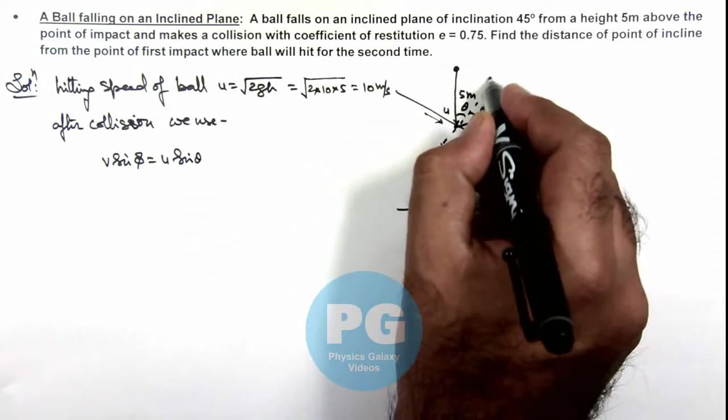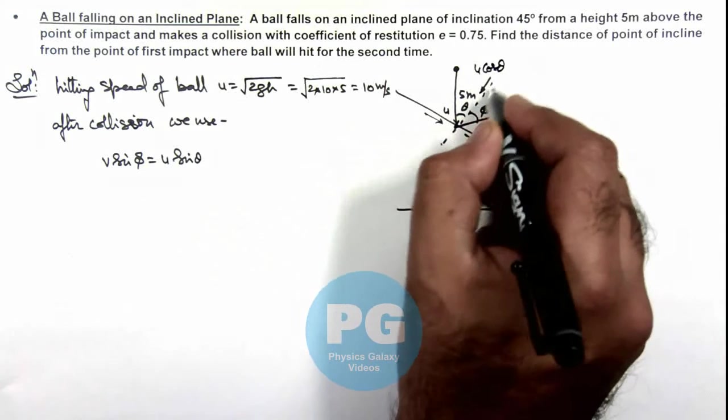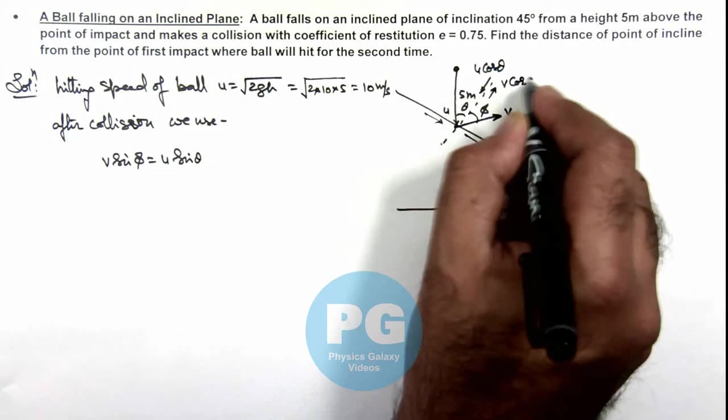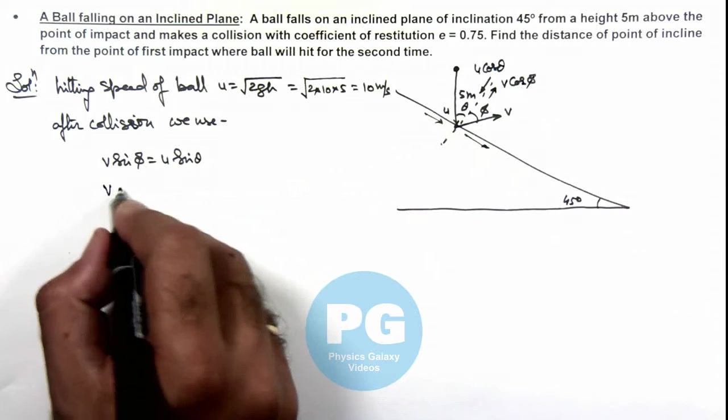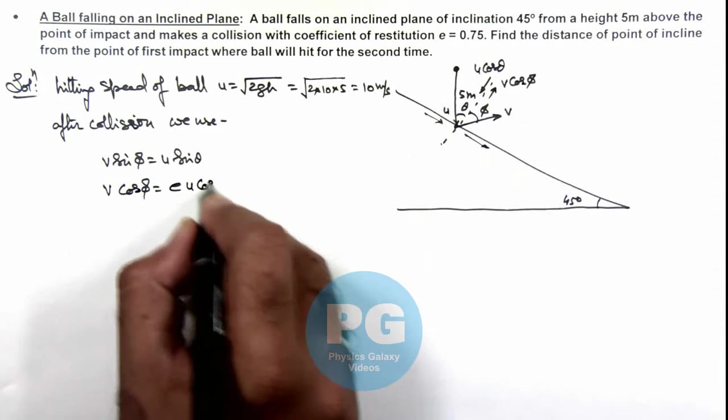But perpendicular to the incline, the approach velocity is u cos θ, and the receding velocity is v cos φ. So we can write v cos φ = e × u cos θ.